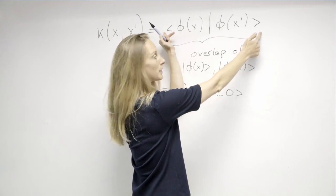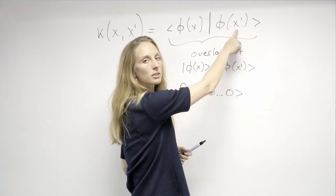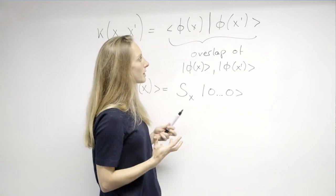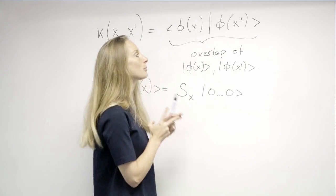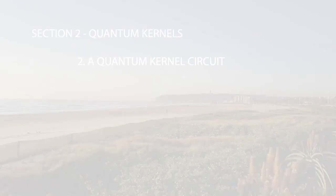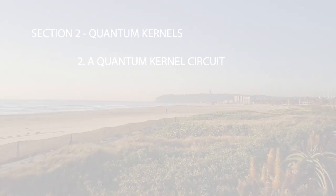If we take overlaps or inner products of two quantum states that were prepared in the same way but with different dependency on an input, what we have is a kernel and this is what we call a quantum kernel. This is quite interesting because if I have a quantum computer that can compute overlaps and prepare quantum states depending on data points, then we're in business. This quantum computer could in principle compute a quantum kernel.